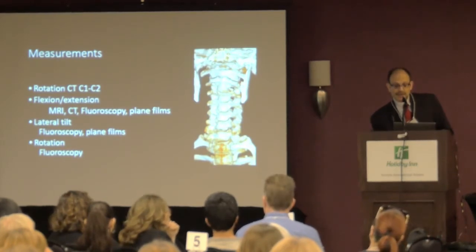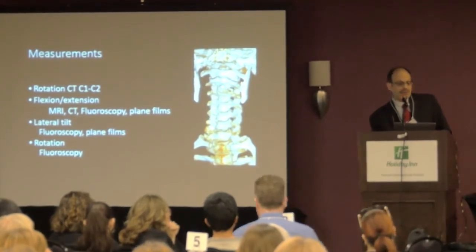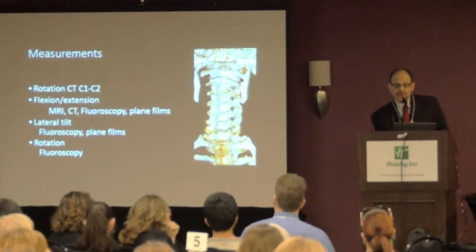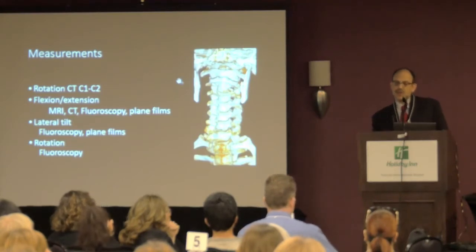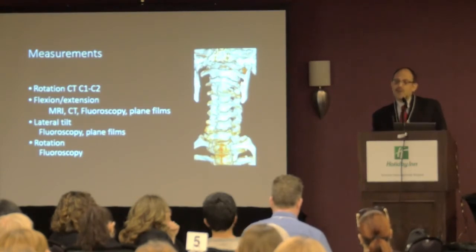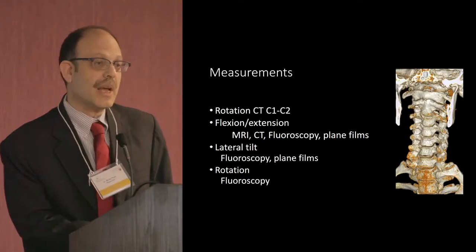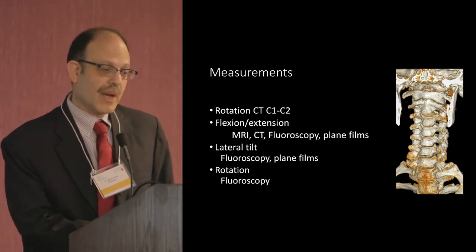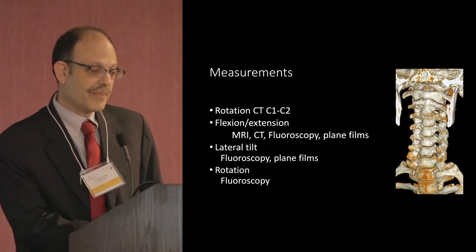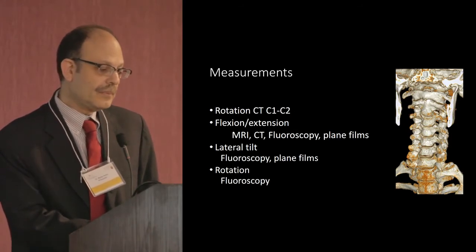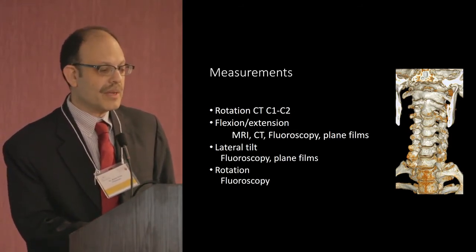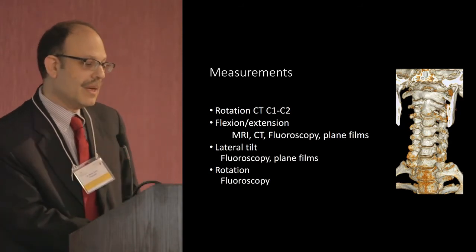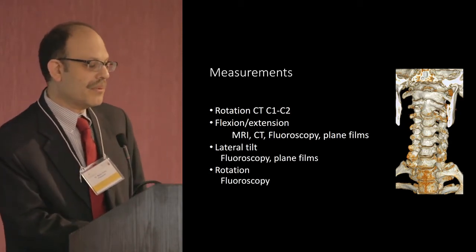This is the skull, this is C1, and this is C2. C2 rotates — the main motion at that level is turning, so we can look at it with rotation, and we typically use CT. We can also bend forward and back to see how things are sliding, using X-rays or fluoroscopy — it can also be done with CT or MRI. We can do lateral tilting with X-rays or fluoroscopy, and sometimes rotation is helpful.